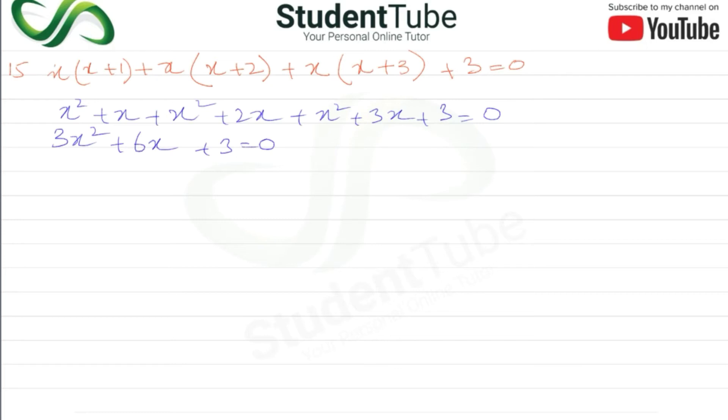Now 3x² + 6x + 3 is equal to 0. We can factor this.